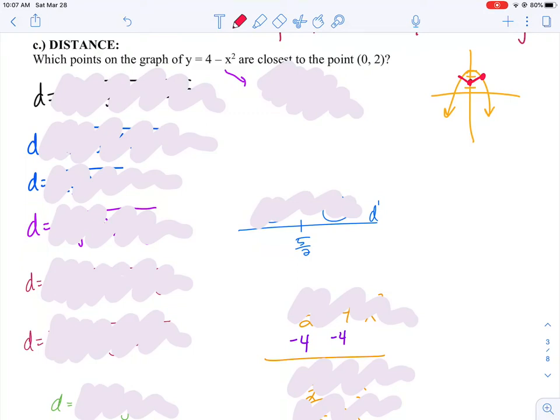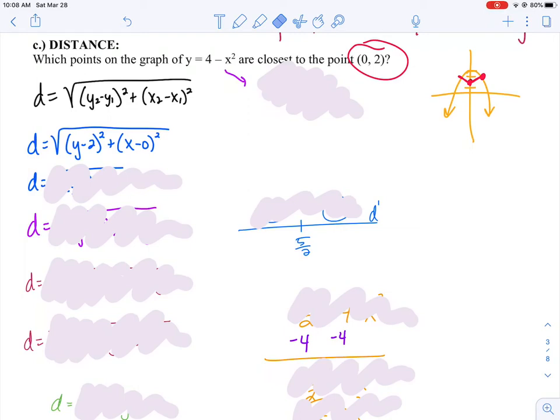The first step when optimizing is to try to find an equation that we're trying to optimize. What are we trying to find the minimum of? We're trying to find the minimum distance between two points. We should know the distance between two points, that there's an equation for that. The problem is, in this equation, there's way too many variables. I see 1, 2, 3, 4, 5 different variables. We have to minimize the number of variables in our equation. Because I know that one of the points is (0, 2), I should be able to plug that information into my formula. Now I end up with a new equation that says the square root of (y minus 2) squared plus x squared.